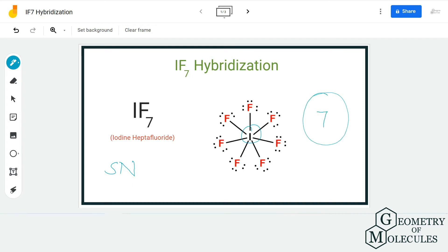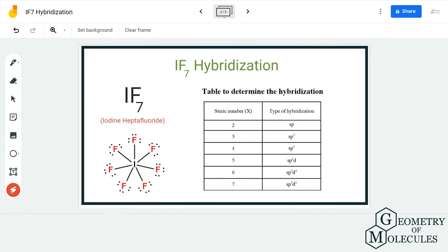As a result, we have seven bonding pairs of electrons on the central atom. Using this, we find out the steric number of the given molecule. Here, iodine has seven bonding pairs of electrons, which means the steric number is seven for IF7.